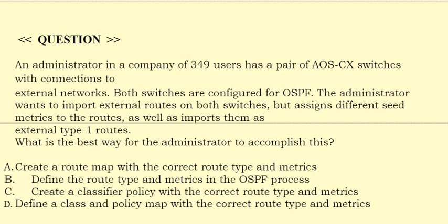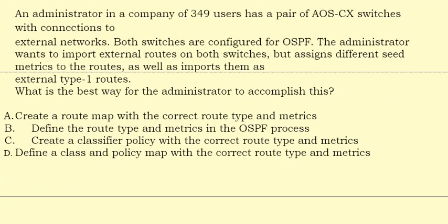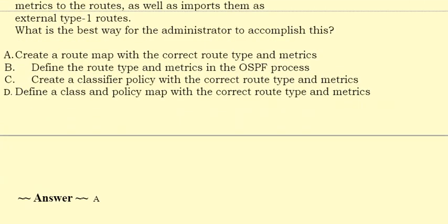Option C: Create a classifier policy with the correct route type and metrics. Option D: Define a class and policy map with the correct route type and metrics. The correct answer is Option A.